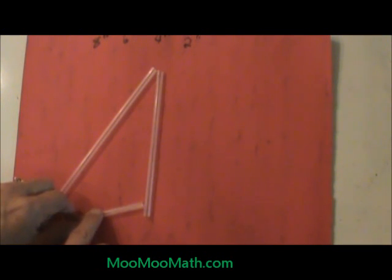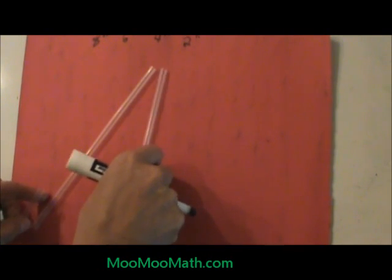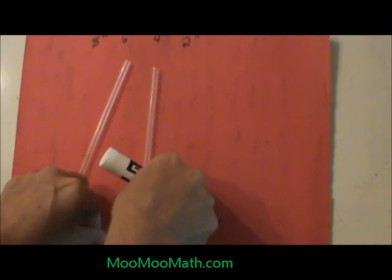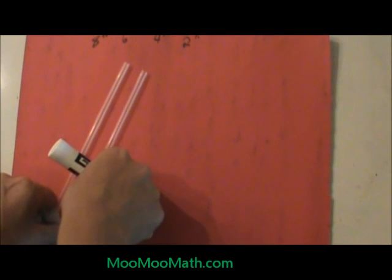What happens if I replace this side of 4 with a side that is only 2? Look what is going to happen. Can I create a triangle? Will that 2 reach down there? And guess what? It doesn't reach.